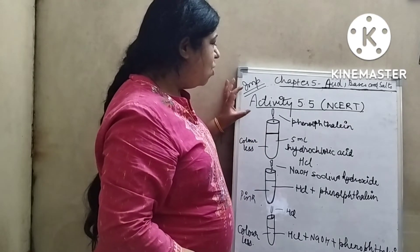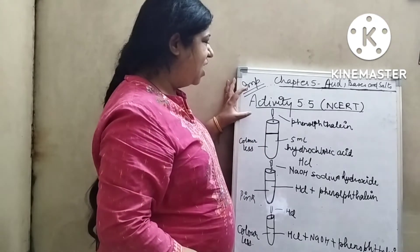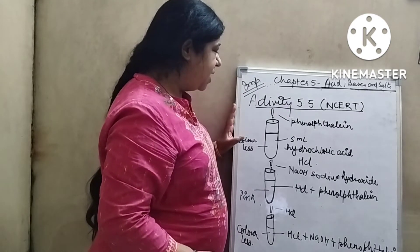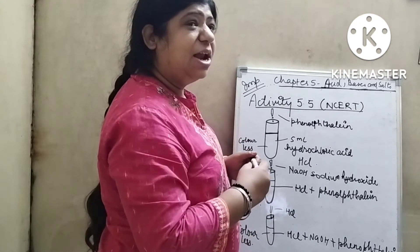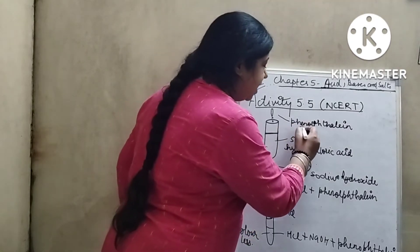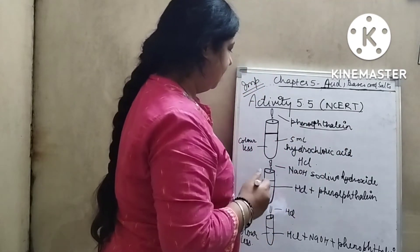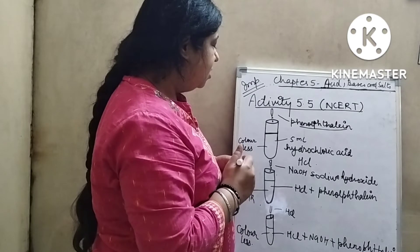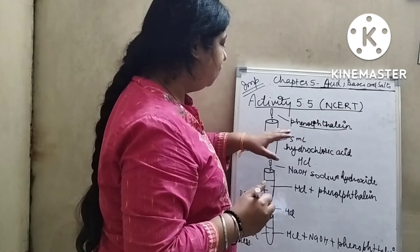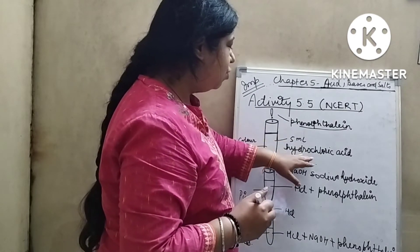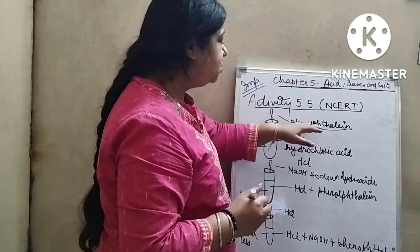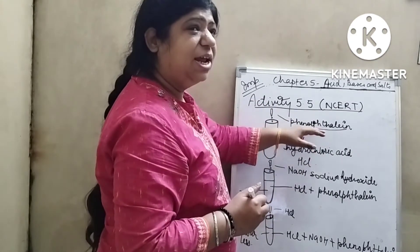Now activity 5.5 of NCERT — what they are explaining? They are taking one new indicator, that is phenolphthalein. Take a test tube, take 5 ml of hydrochloric acid, that is HCl, and add a few drops of phenolphthalein in it.